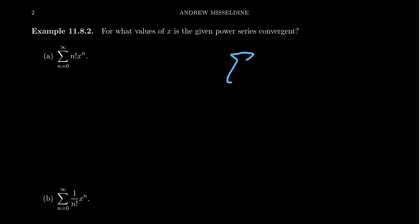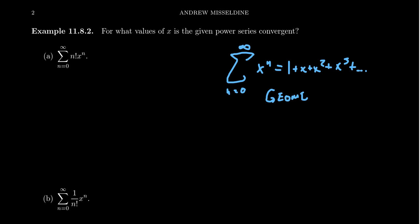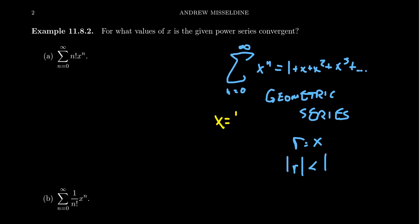For example, if we take the geometric series — the sum of X to the N where N goes from 0 to infinity — in expanded form this looks like 1 plus X plus X squared plus X cubed, and so on. This is a geometric series where the constant ratio R is X itself. In order to be convergent we need the absolute value of X to be less than 1. So if we take X equal to one-half, the series would be convergent, but if we take X equal to 1, the series would be divergent.